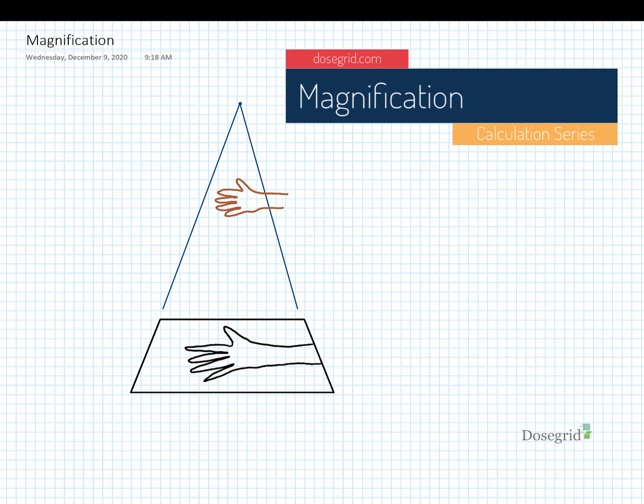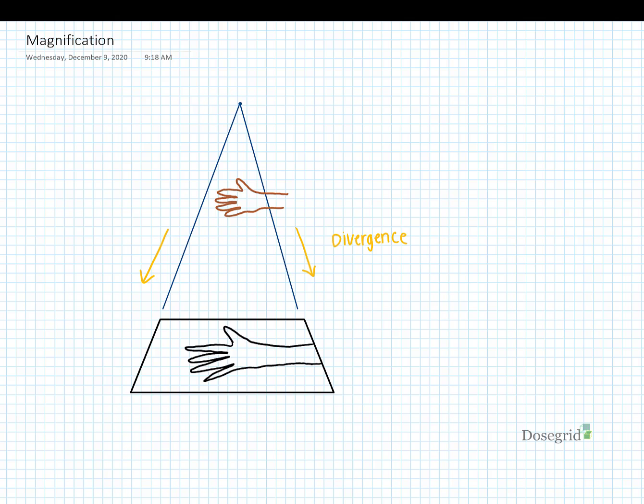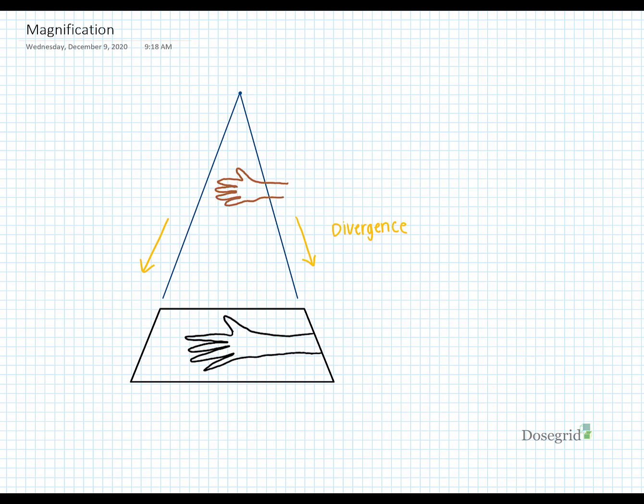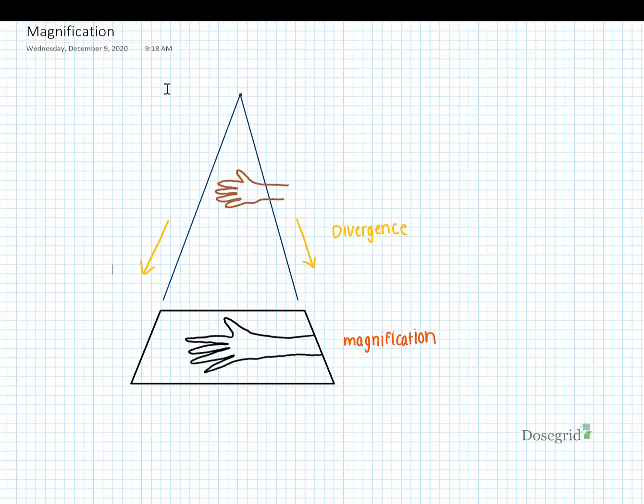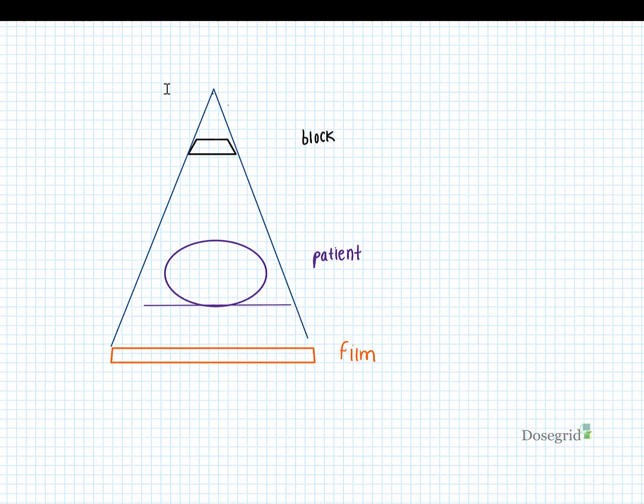Today we'll be learning how to solve magnification problems. As an x-ray beam diverges, the image produced on film is always slightly larger than the original. This is magnification. Historically, magnification applied to film adjustments and physical blocks.